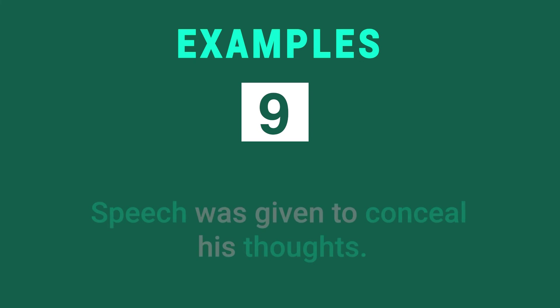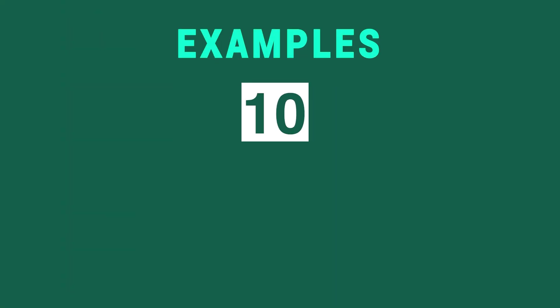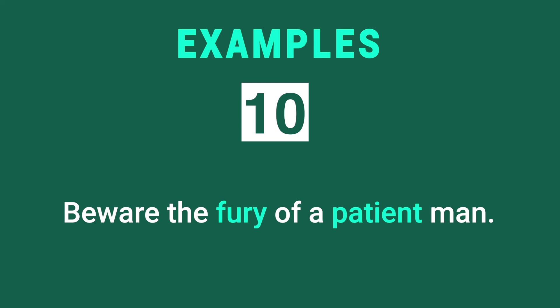Example number nine: 'Speech was given to conceal his thoughts.' Speech and thoughts are again contradictory, contrasted ideas, and it is epigrammatic in nature because there is a shocking contradiction in terms of meaning. Example number ten and the last: 'Beware the fury of a patient man.' A patient man is never supposed to be a furious one, but this makes you think that if you test a patient man repeatedly, it might make him furious. There is a universal truth behind this witty statement based on contrast, so the figure of speech is epigram. Let's now move on to paradox.